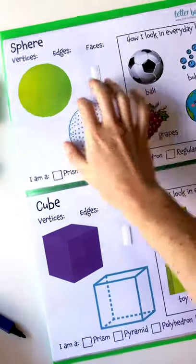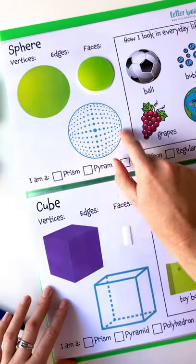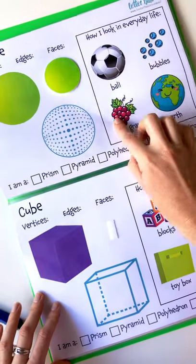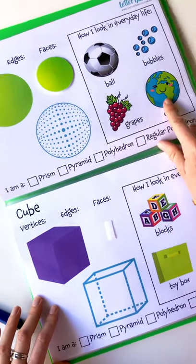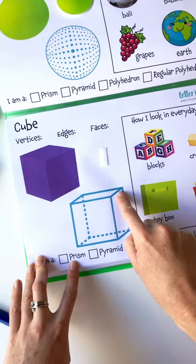So we've got our sphere, pin you on there. So this is, oh it's really hard to do a 3D picture of a sphere, but everyday life, how it looks in everyday life. You've got bubbles, ball, grapes, some grapes, earth. I've got our cube, so you can see here the different edges, toy box, blocks, croutons, present.